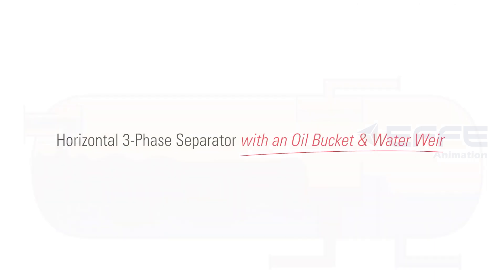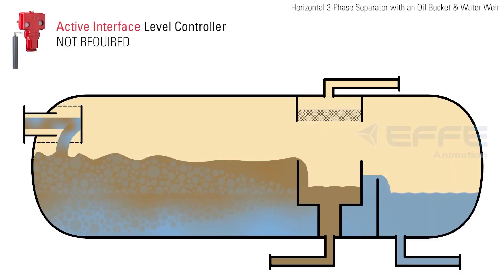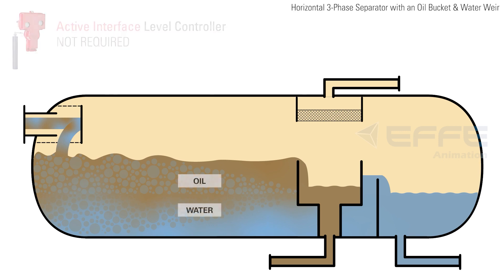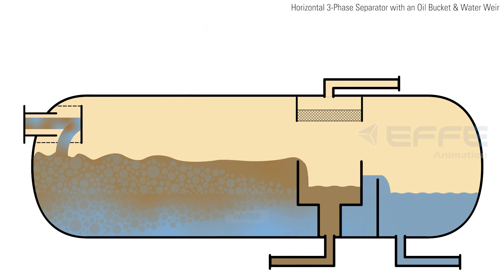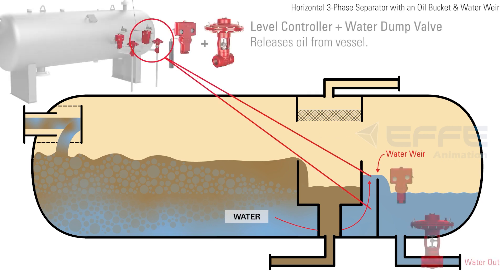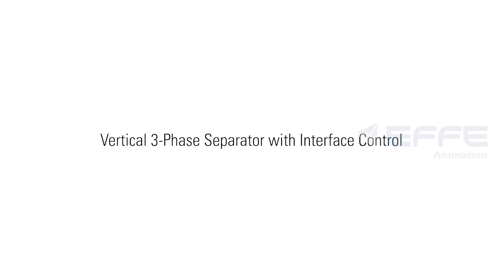In a horizontal three-phase separator with an oil bucket and water weir, the vessel does not require an active interface controller. As the oil separates on top of the water, it spills over the weir plate and into the oil bucket. The oil level in the bucket is controlled by a level controller sending a signal to the oil dump valve. The water flows under the oil bucket and over the water weir, where it is controlled by the water level controller and dump valve.